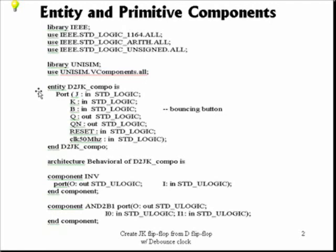Next, we define the entity, which is the black box that we have seen a while ago. That black box is called the entity. We call it the D-to-JK component. The port is made up of J, an input in standard logic; K, also in standard logic; B, in standard logic — our very bouncy push button; and Q is the output standard logic, and QN, which is the complement of Q.